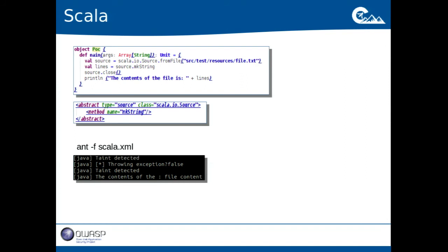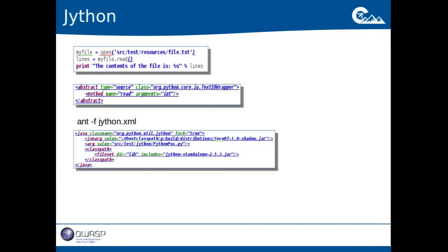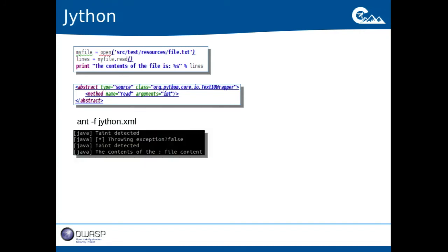The input file does contain a couple of backspaces, which is the point — this is something going wrong that you should test against. For Jython, I open the file, read all the lines, and print them, again executed through Java with particular JVM arguments. The taint was detected there too. So all those various JVM languages, because they run on top of the Java bootstrap classes, can also be traced in this way.